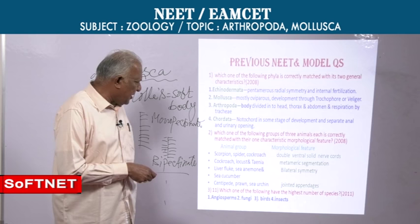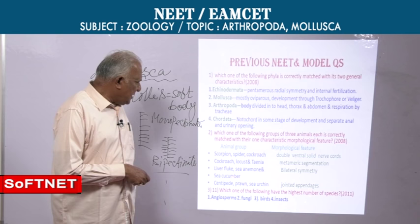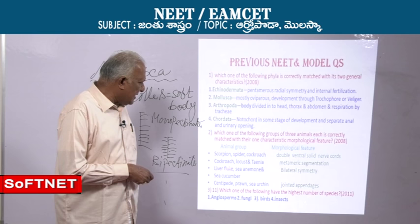Liver fluke, sea anemone, sea cucumber: liver fluke has bilateral symmetry, sea anemone has radial symmetry — these differ, so that option is eliminated.